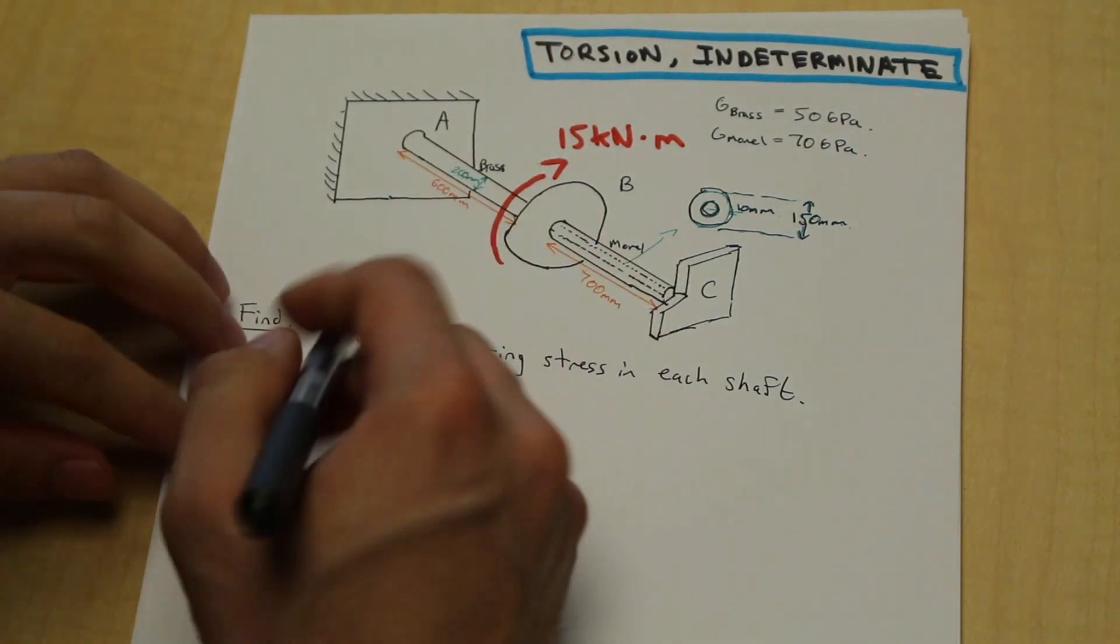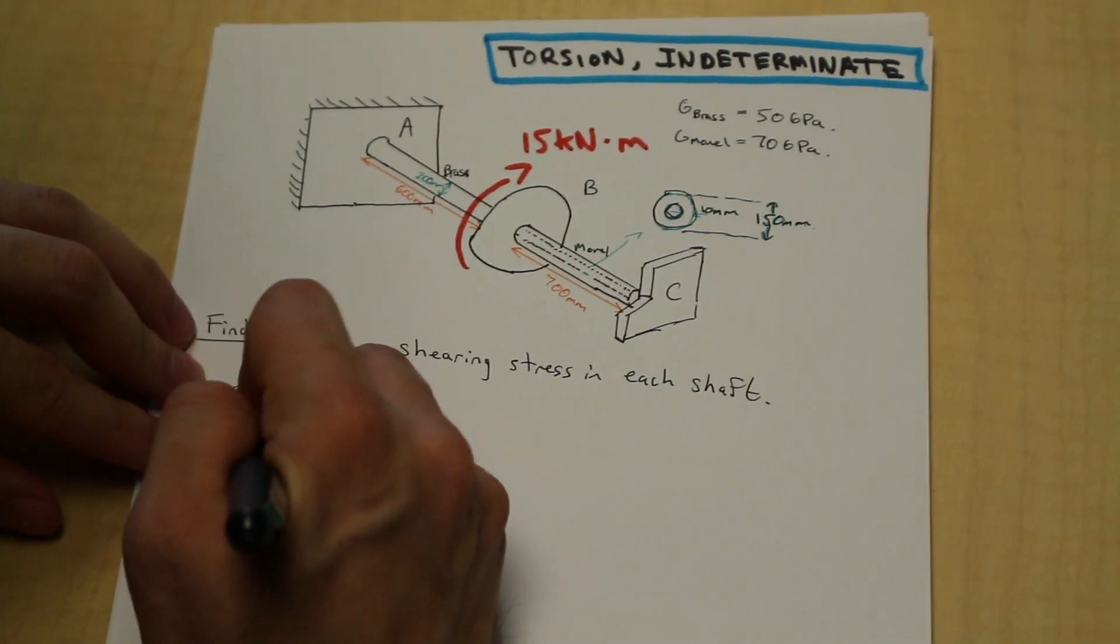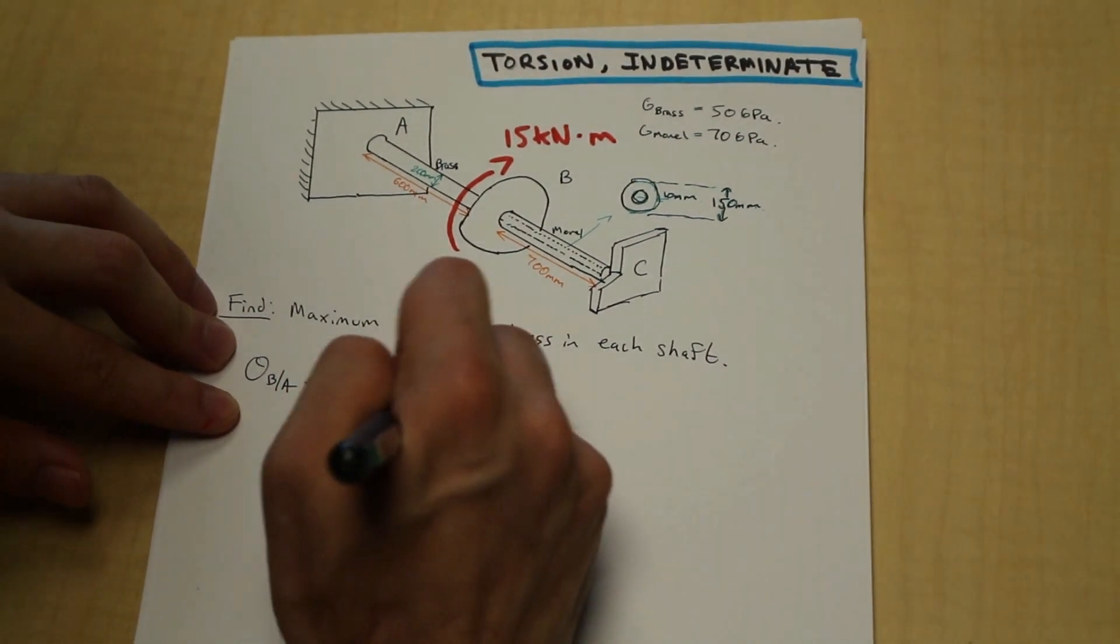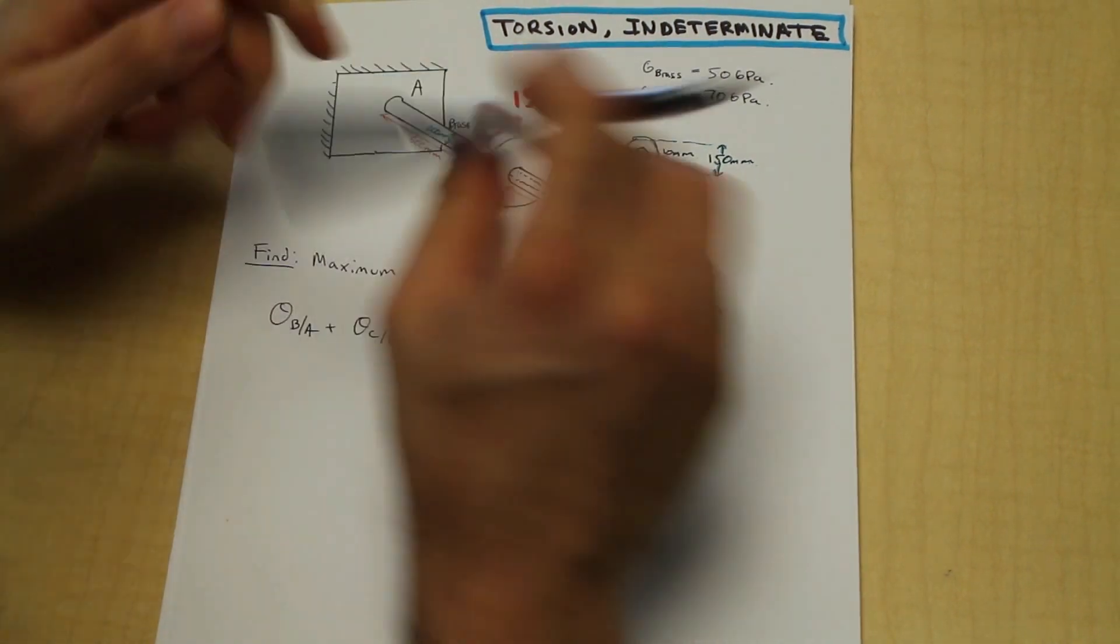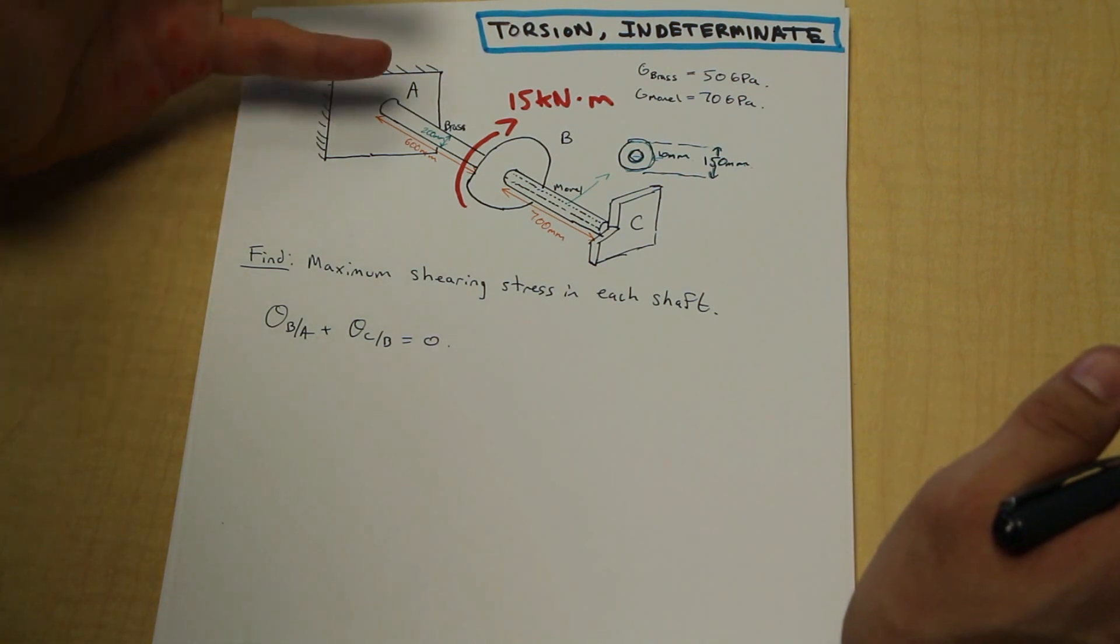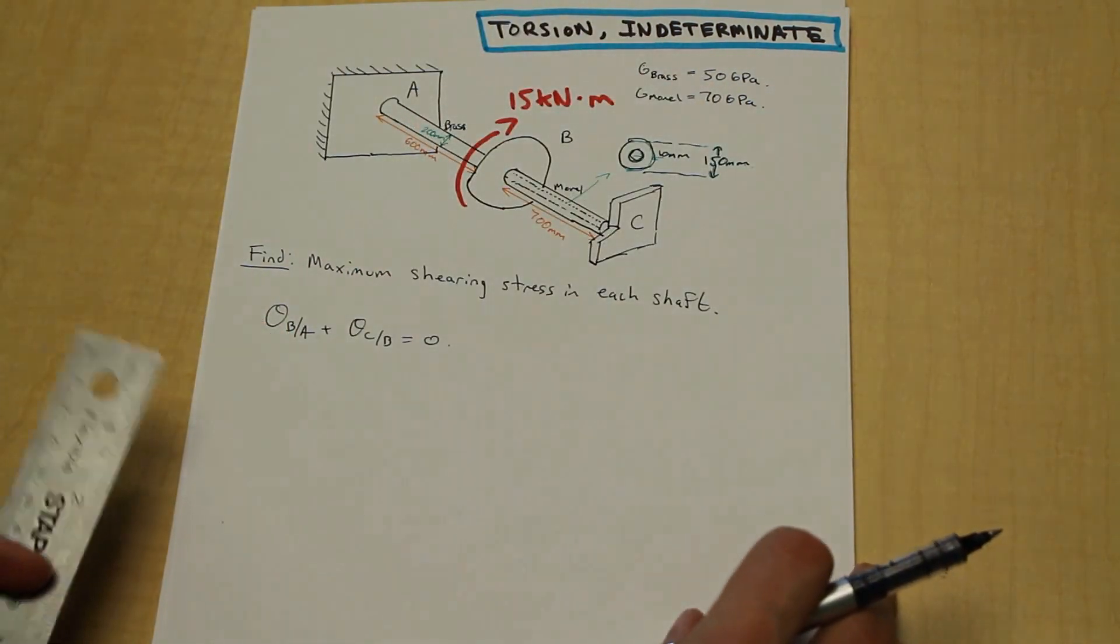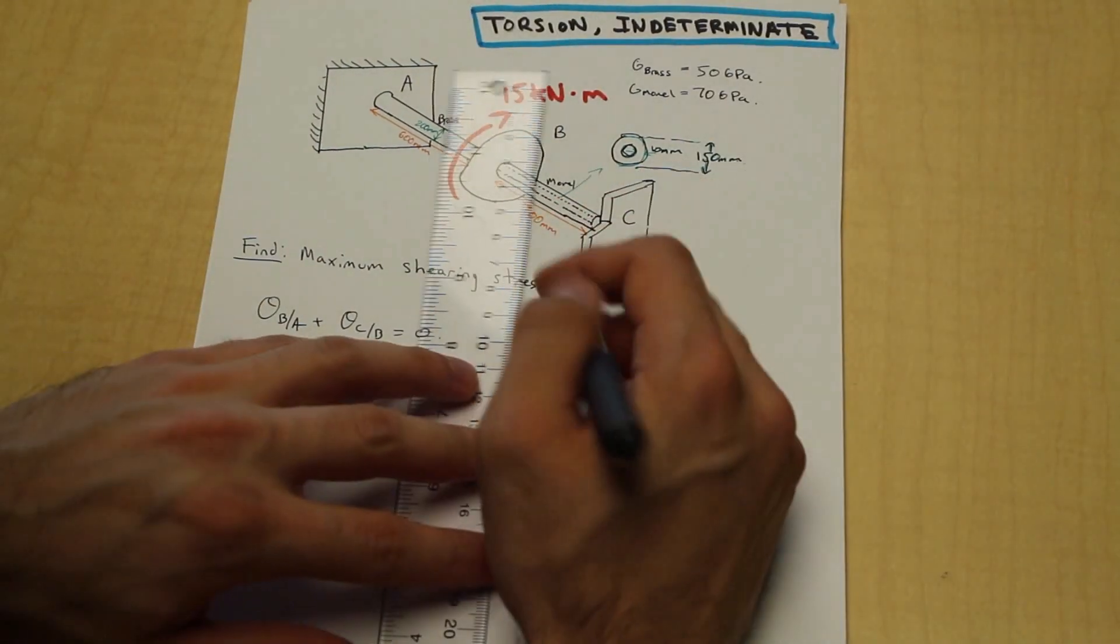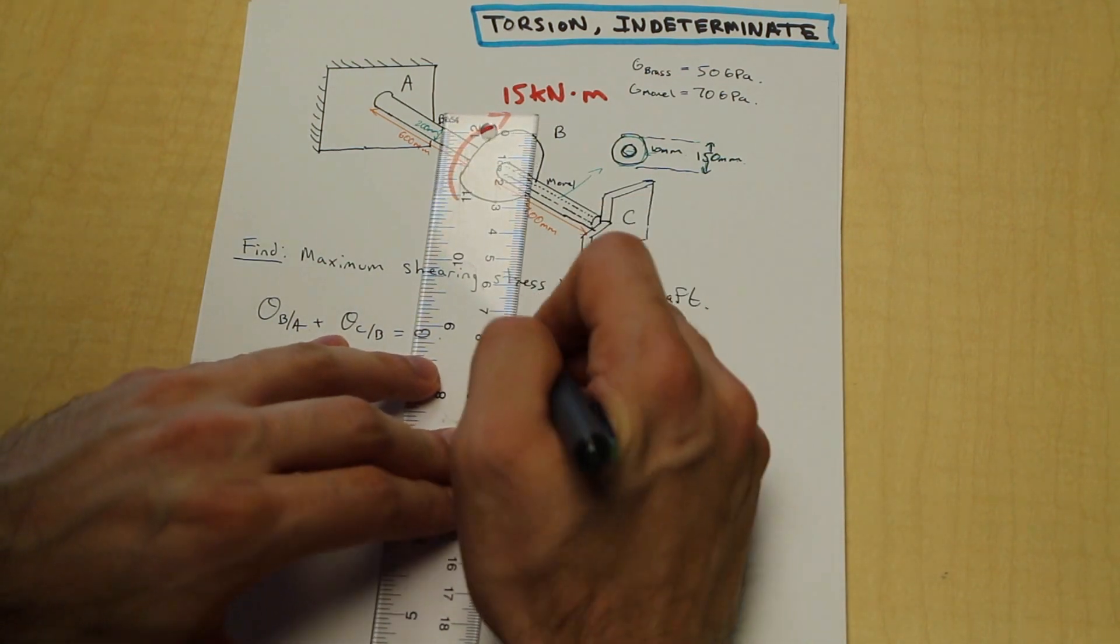So the first step that we need to do is we need to draw a torque diagram and let's just write down the condition that we've discussed before, and it's that these angles of twist are equal to zero. Now how do we begin? That's a good question. We need to draw a torque diagram. Now you might be asking, oh we don't know what the torques are at A and C, how can we draw a torque diagram? That's a good question. We can draw the torque diagram in terms of the variables. So we can substitute our torque diagram values into our angle of twist equation and we can solve for our unknown. So let's get started with the torque diagram.